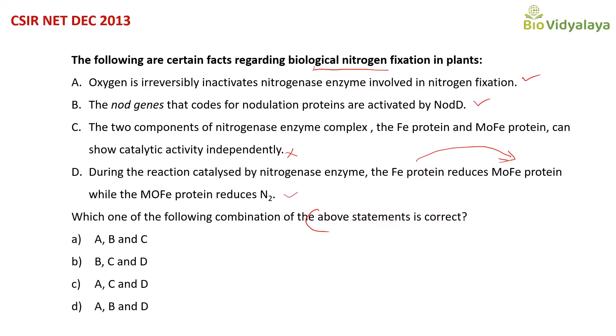The correct statements are A, B, and D. Looking at the options: option A has A, B, and C — C is not correct, so option A is wrong. Option B has B, C, and D — C is not correct, so option B is wrong. Option C has A, C, and D — C is not correct, so option C is wrong. Option D has A, B, and D — all these statements are correct. So the correct answer is option D: A, B, and D.